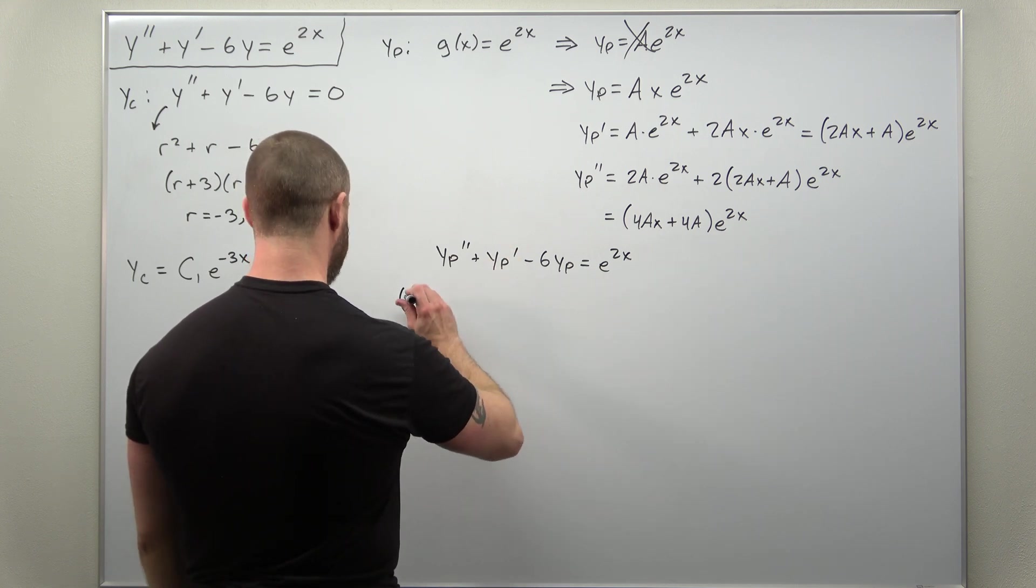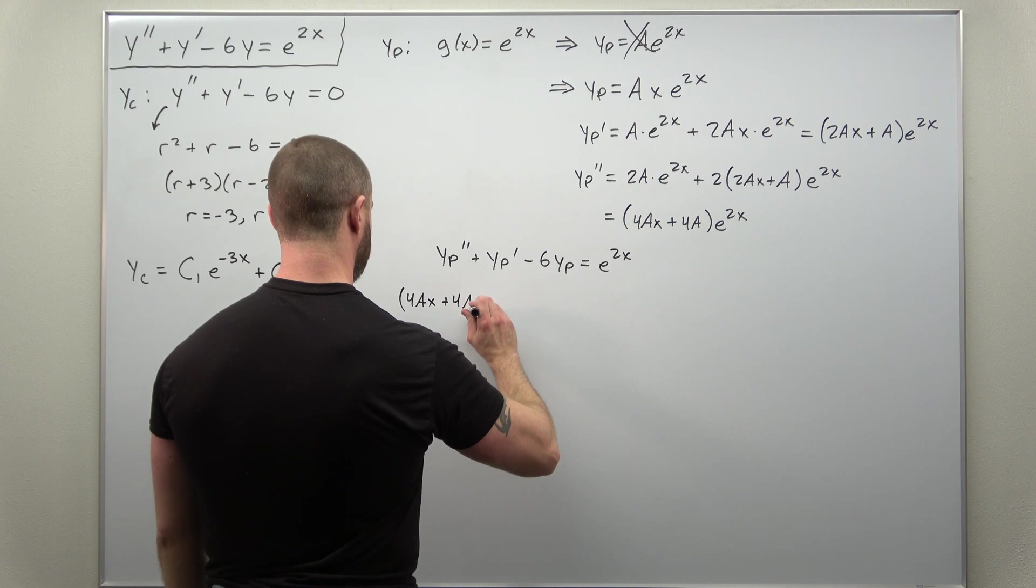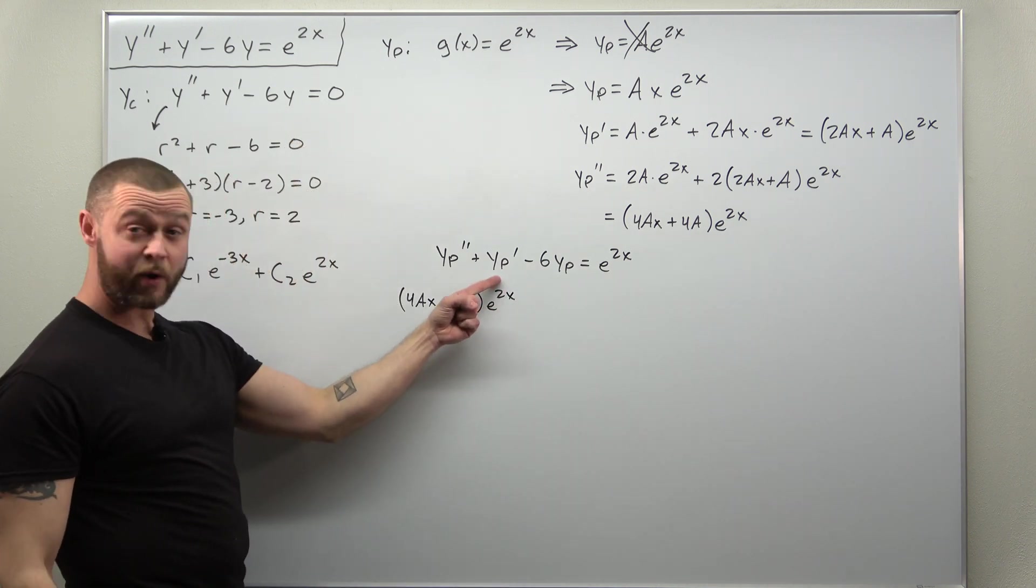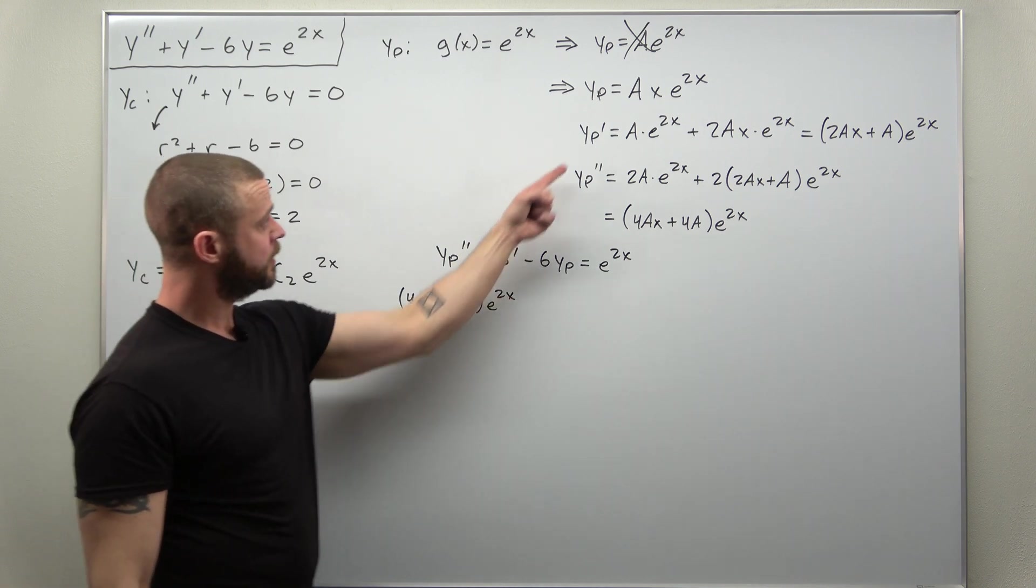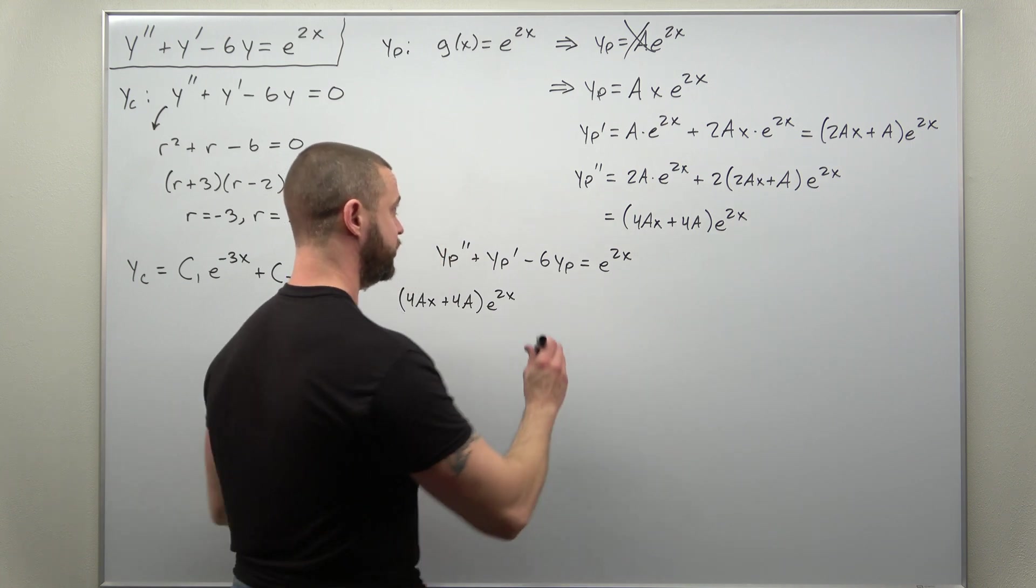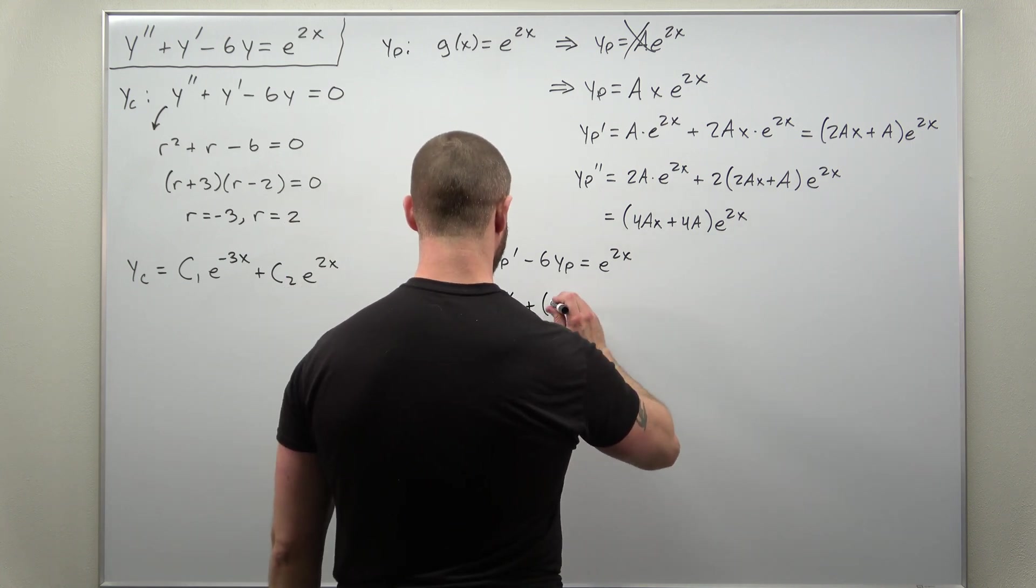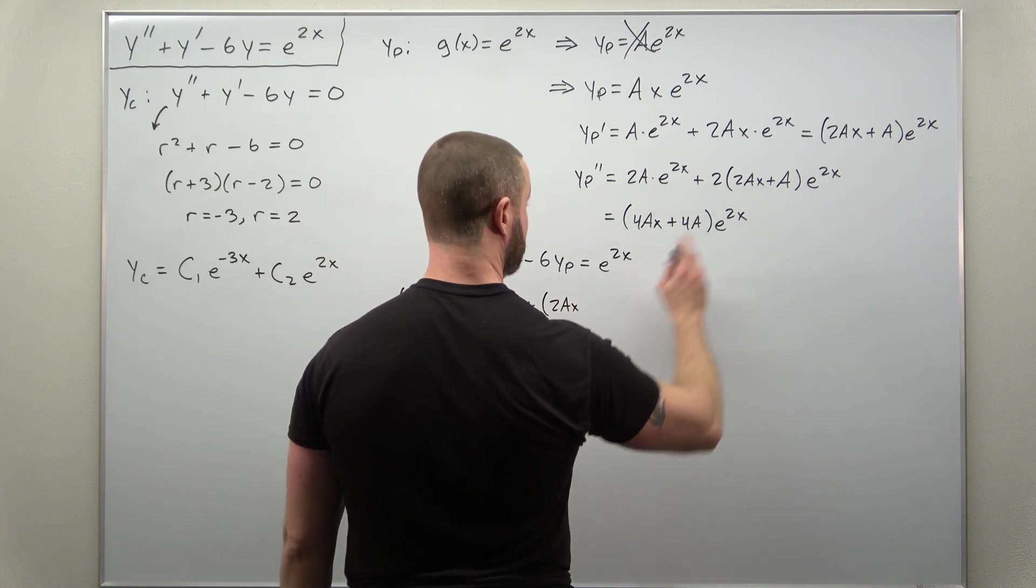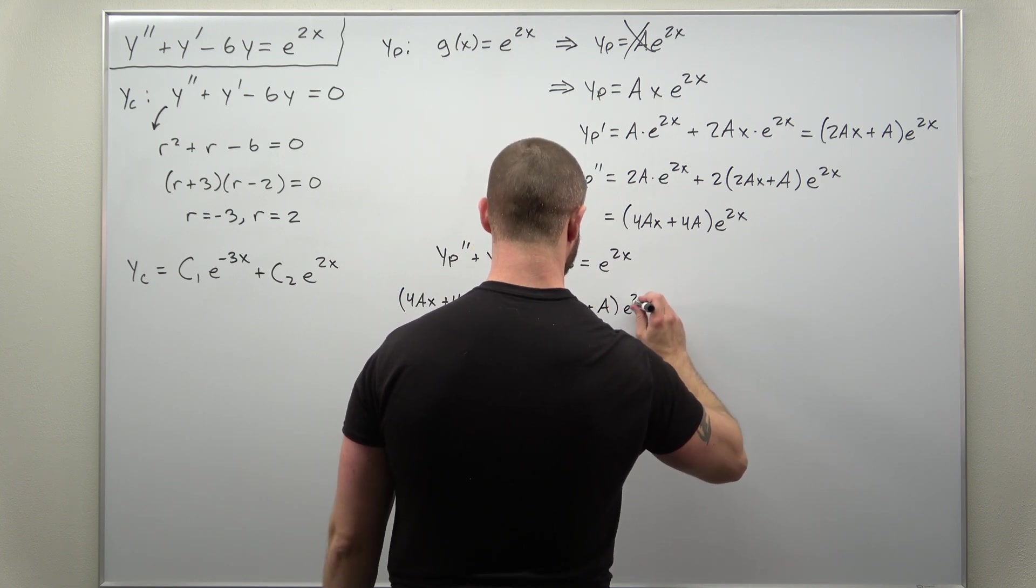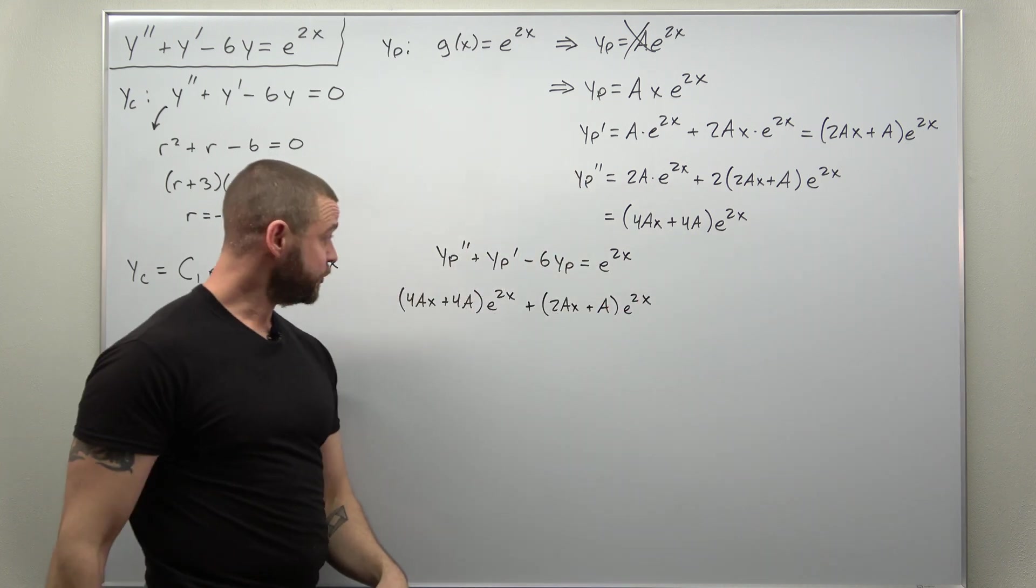And if we plug all this in, we have our second derivative right here. So we have (4Ax + 4A)e^(2x). We go to now our first derivative term, which we simplified over here. So (2Ax + A)e^(2x).